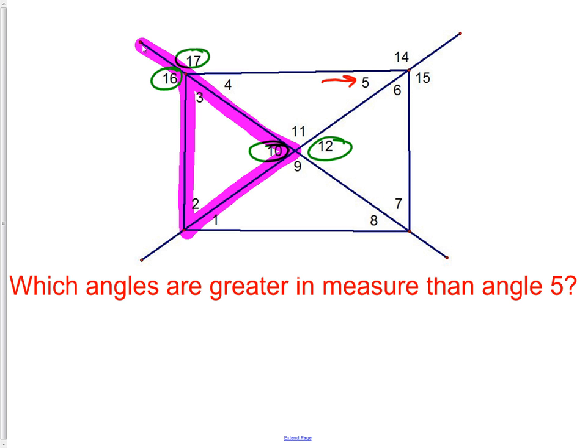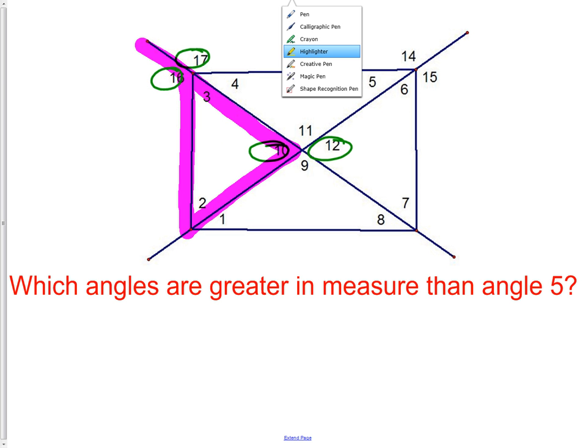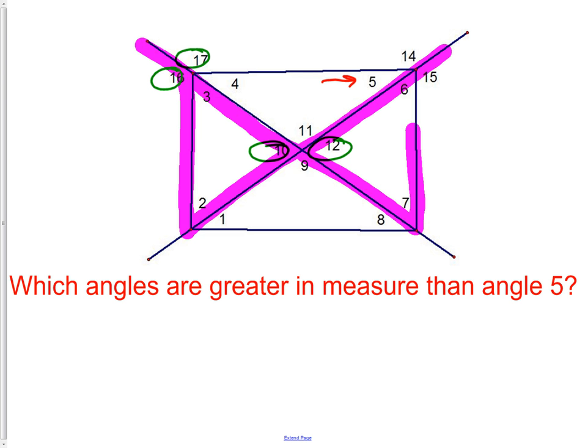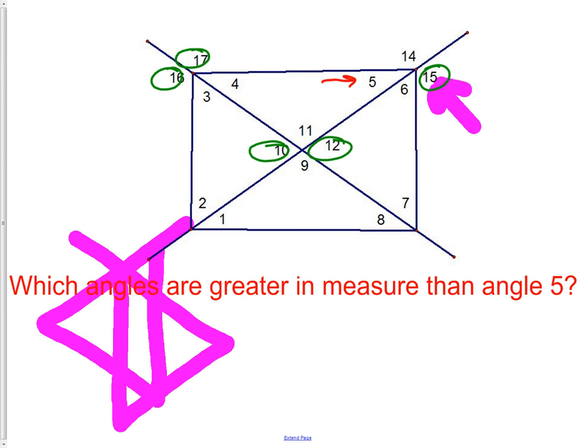If we use the same logic on the other side and trace this triangle out, we see that 15 is our exterior, and it would be bigger than 12 and 7. That means 15 is bigger than 12, which is bigger than 5. We now have angles 10, 12, 15, 16, and 17, all bigger than angle 5. And based on the information in this problem, that is all we can say.